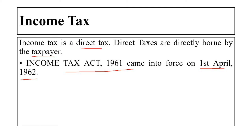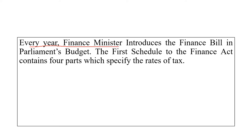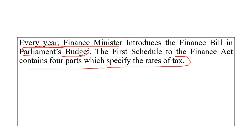Please remember the year because there might be a question asking when the Income Tax Act came into force. It is confusing because they might give you options like 1961 and 1962. Remember: this act came into force on 1st April 1962, though the act is 1961. Every year the Finance Minister introduces the Finance Bill in the Parliament budget. The first schedule to the Finance Act contains four parts which specify the rate of taxes.